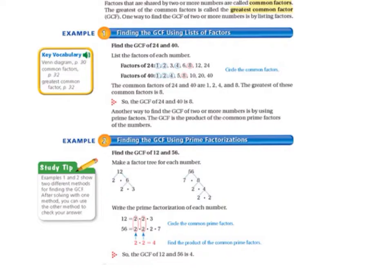Example 1 is finding the GCF using lists of factors. So we're going to find the GCF of 24 and 40. We're going to list the factors of each number.